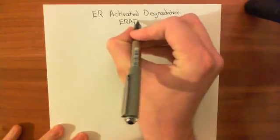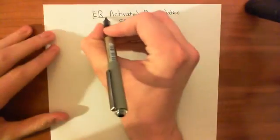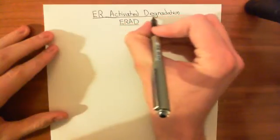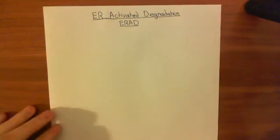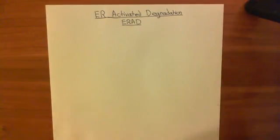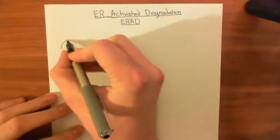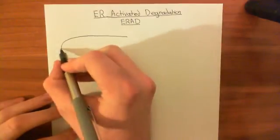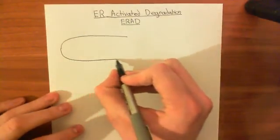We're going to start with how the endoplasmic reticulum removes a protein from its lumen, then see how the protein is ubiquitinated by several enzymes, and finally how being ubiquitinated leads to its degradation back into amino acids. This pathway is essentially for getting rid of proteins that have misfolded within the endoplasmic reticulum.